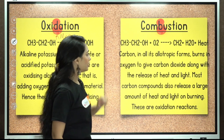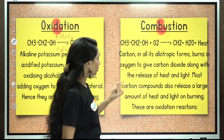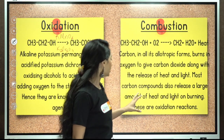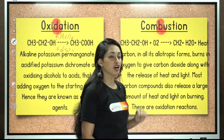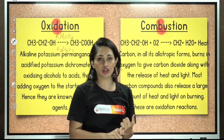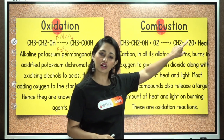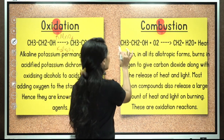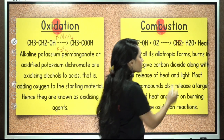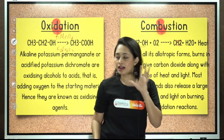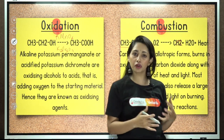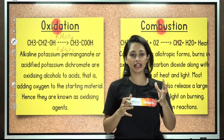We also have combustion reactions. Combustion reactions lead to the formation of carbon dioxide along with heat and light energy. Carbon in all its allotropic forms burns in oxygen to give CO2 with release of heat and light. Most carbon compounds also release a large amount of heat and light on burning. For combustion to happen, oxygen is essential — as seen in the fire triangle. Ethanol also undergoes combustion to form carbon dioxide, heat, and light energy.